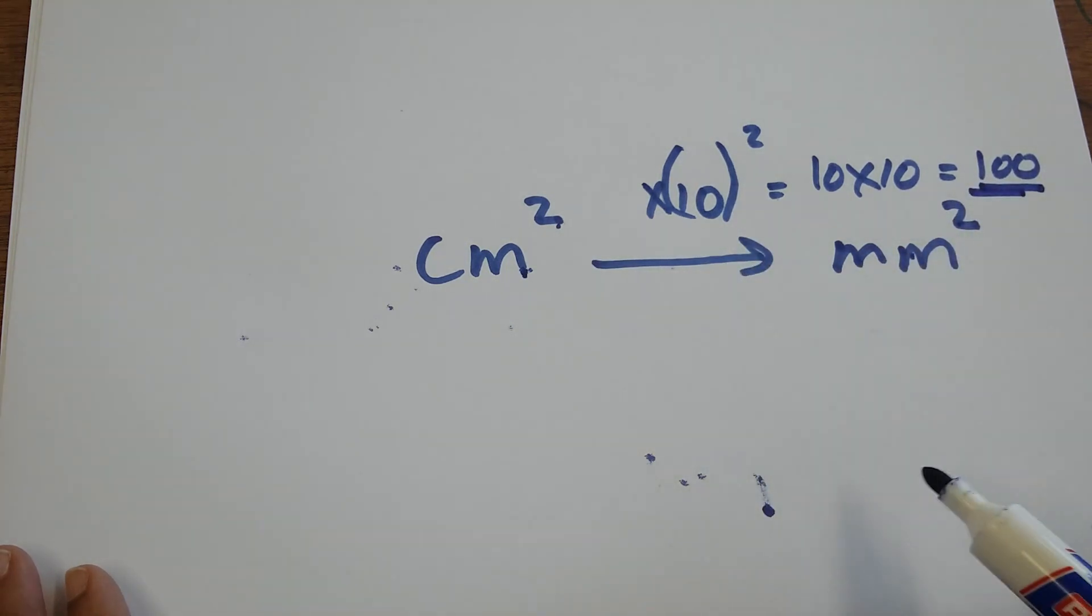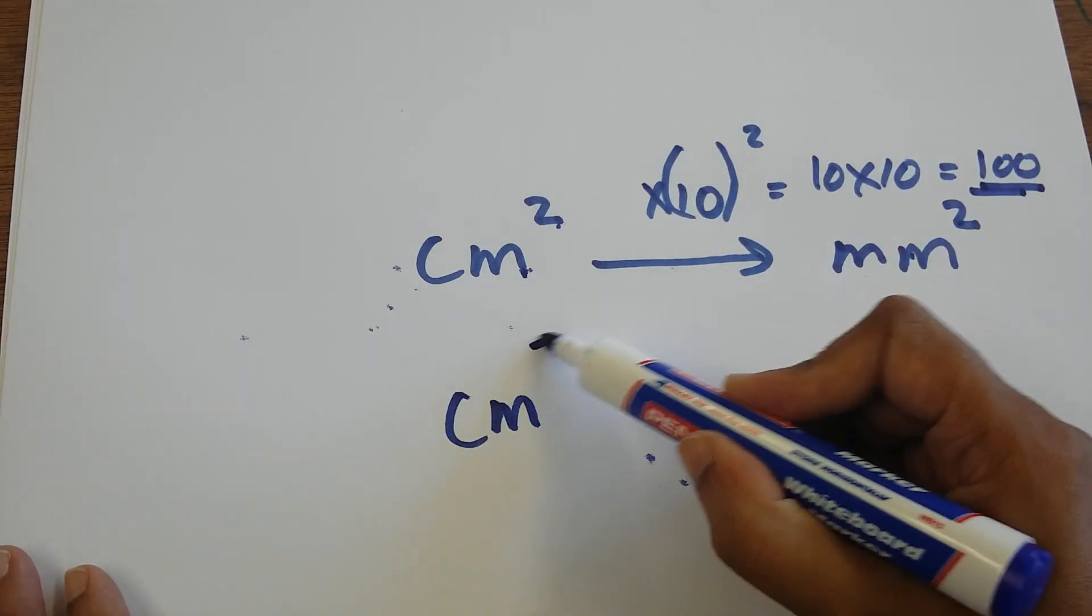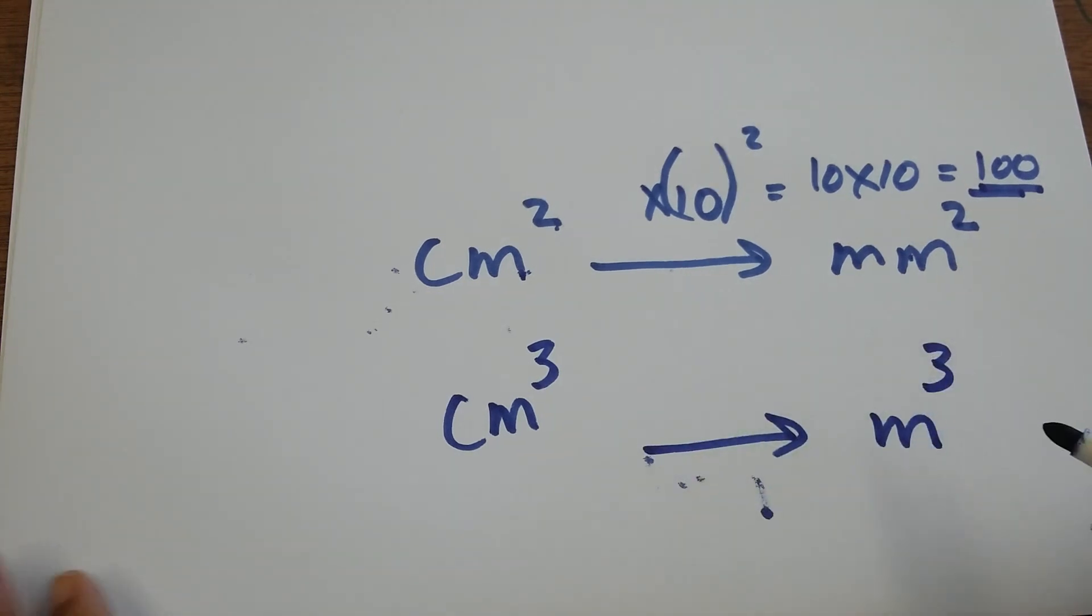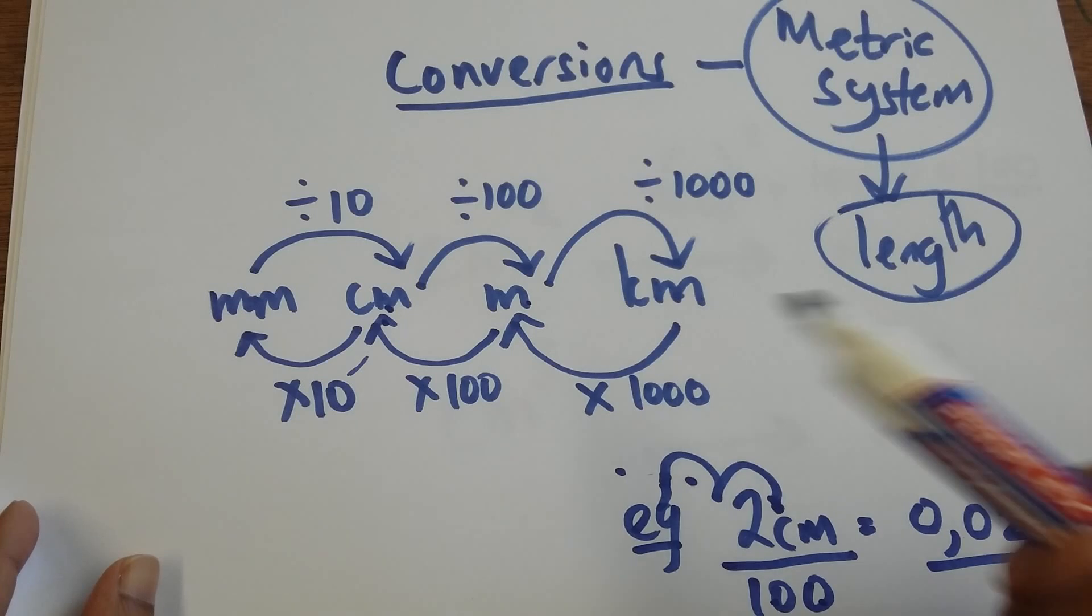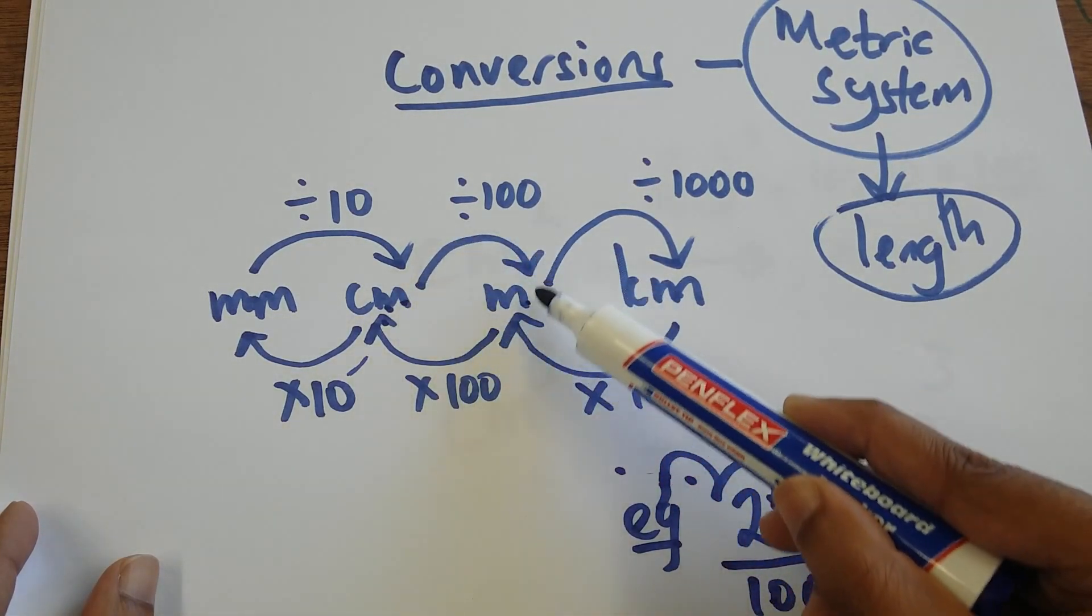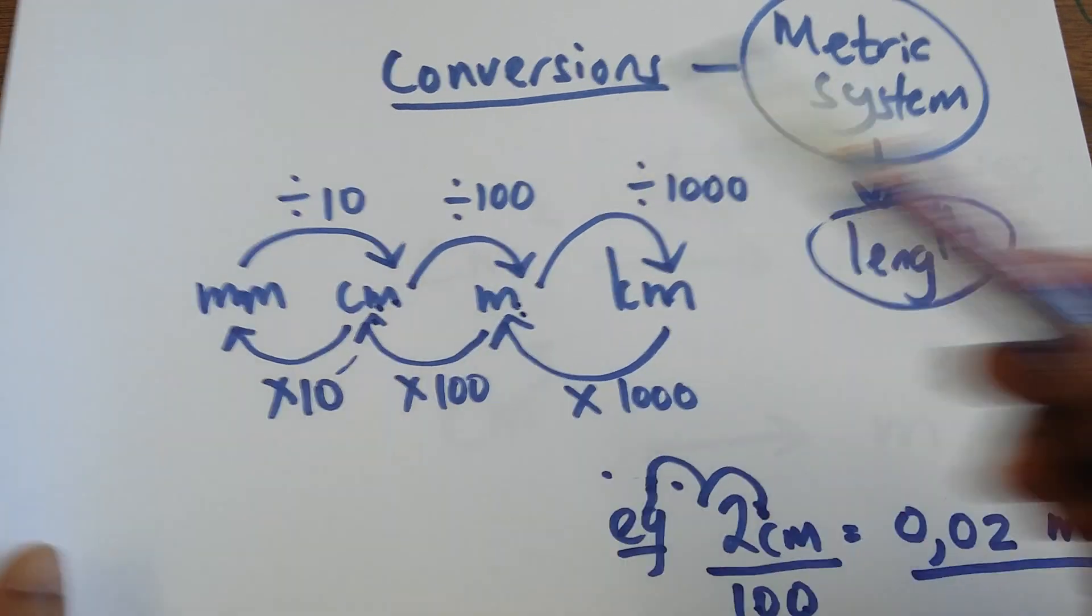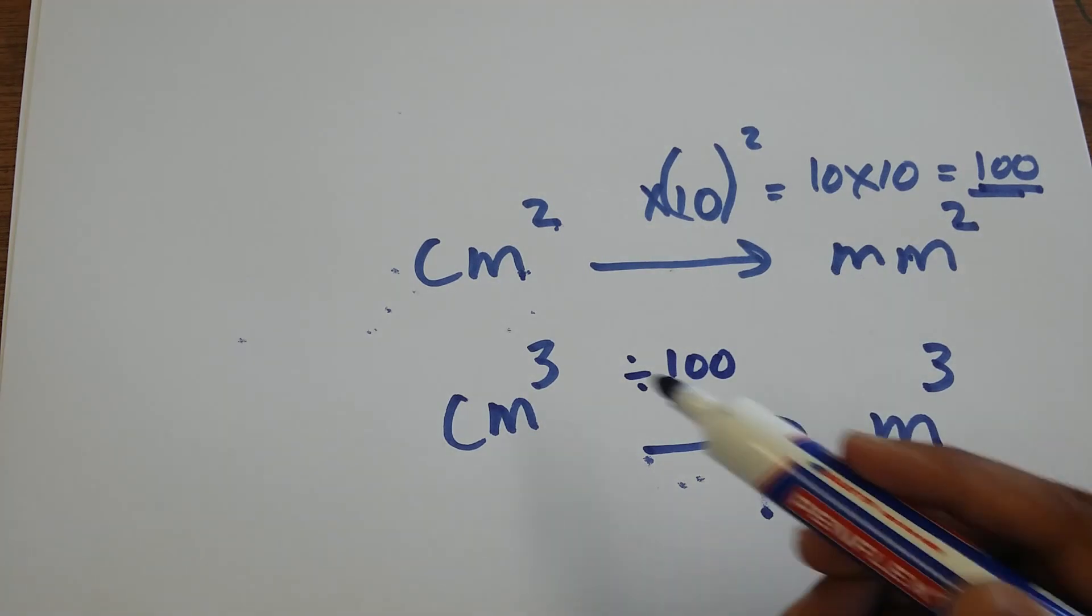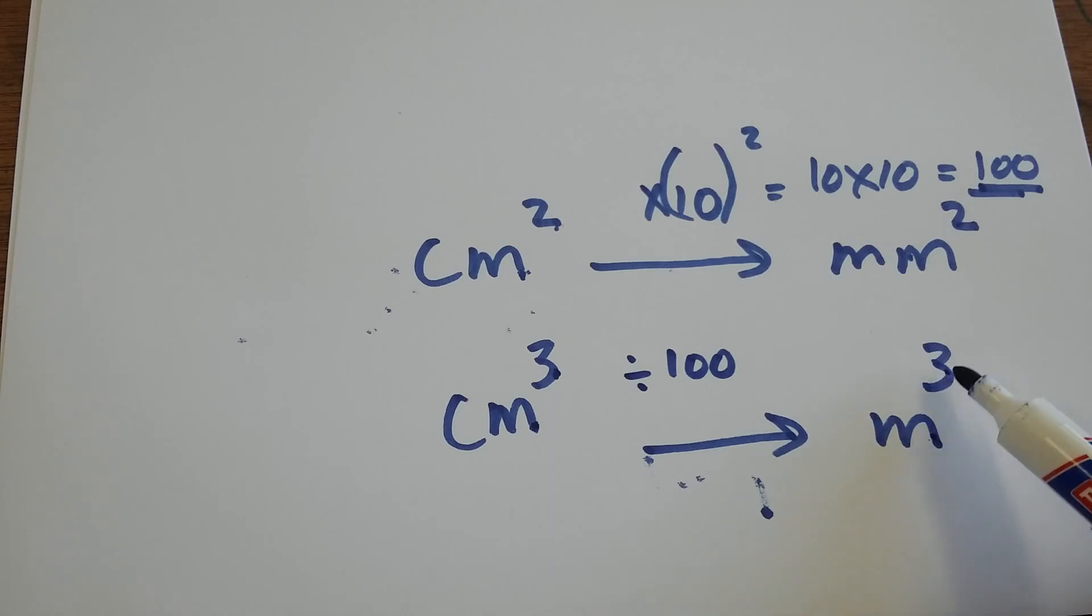I can change this to centimeter cube to meter cube. Once again, I go to my conversion. I decide the direction in which I'm moving. I'm going from centimeter to meter, so my rule is divide by 100. But centimeter is cube, meter is cube, so